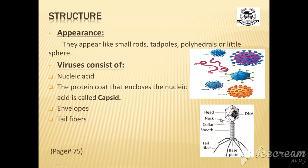And envelopes—what are envelopes? Some viruses have accessory structures called virus envelopes that help them infect their host. They are membranes covering their capsids. Around the capsids there are envelopes, and the last ones are the tail fibers.